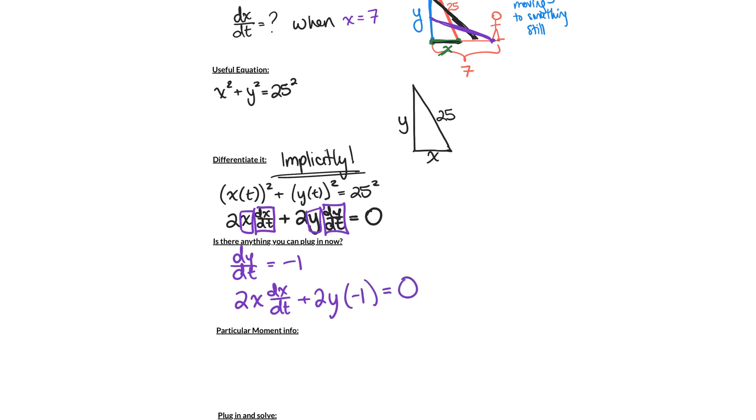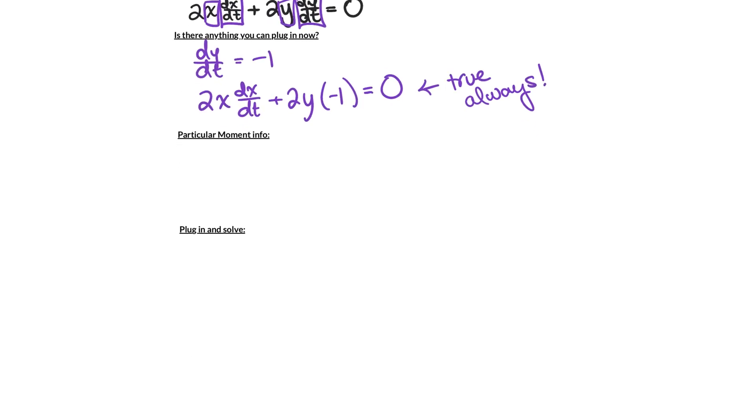Alright, so we have 2x(dx/dt) + 2y(-1) = 0. Now that is the most we can say that's true for the entire movie, true always, that entire period of time while the ladder's sliding down the wall. So now we have to look at that particular moment in time when x equals 7, because remember we wanted to find dx/dt when x equals 7. And what we would like to be able to plug in is what is x? Well, that should be easy, that should be 7. What is dx/dt? That's the thing we're trying to find. What is y?